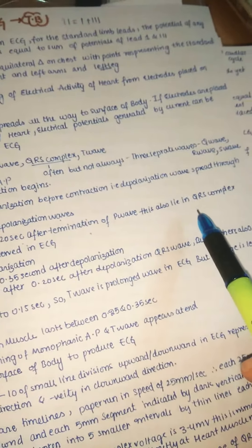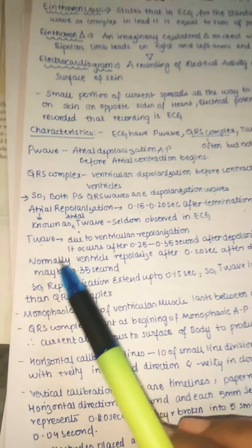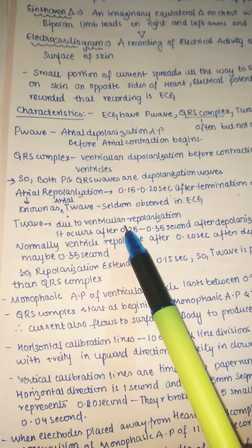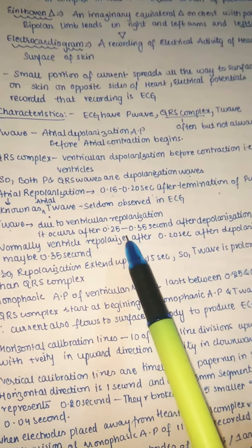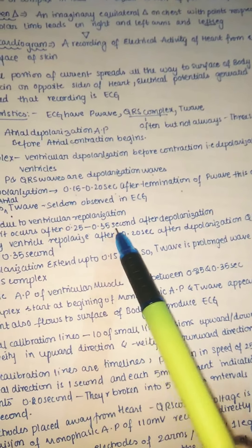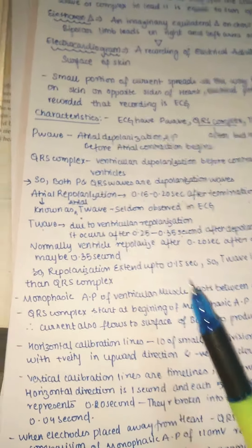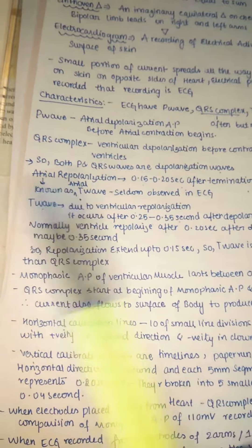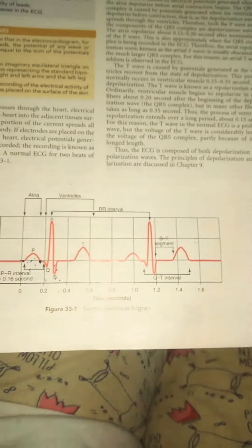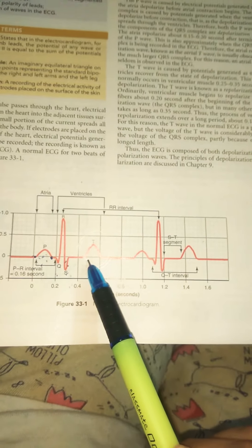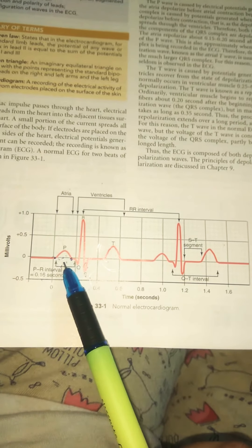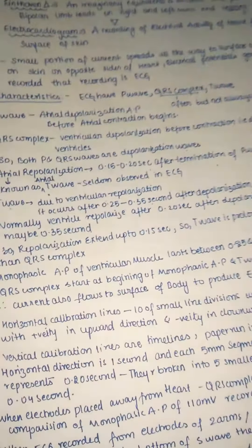In summary: atrial depolarization is seen as the P wave, and ventricular depolarization as QRS. Atrial repolarization is not visible in ECG, but ventricular repolarization is seen as the T wave. The T wave occurs about 0.25 to 0.35 seconds after ventricular depolarization. So: P wave = atrial depolarization, QRS = ventricular depolarization, T wave = ventricular repolarization.